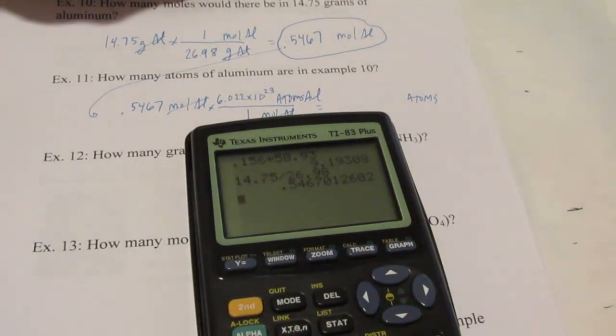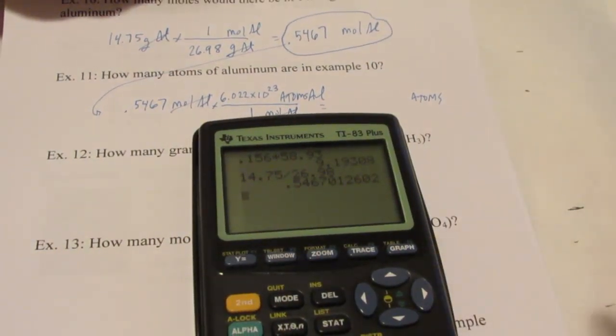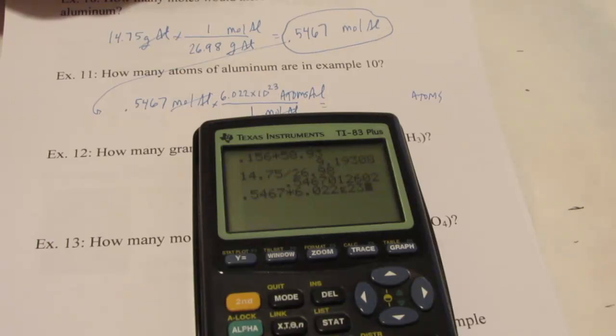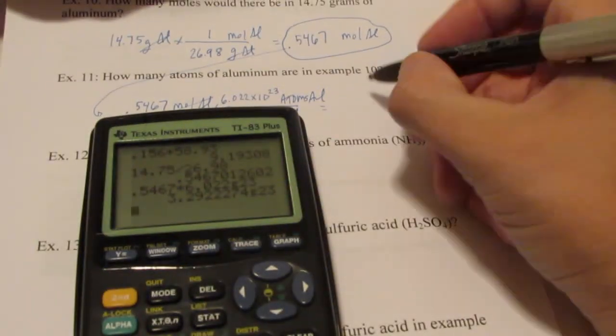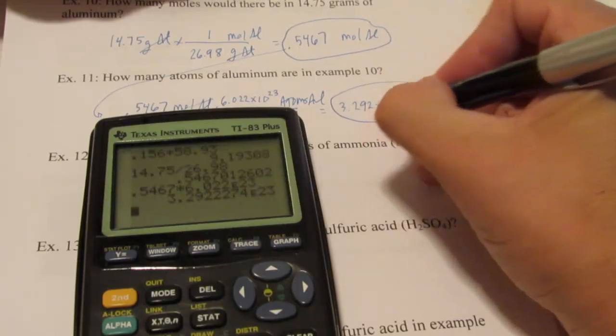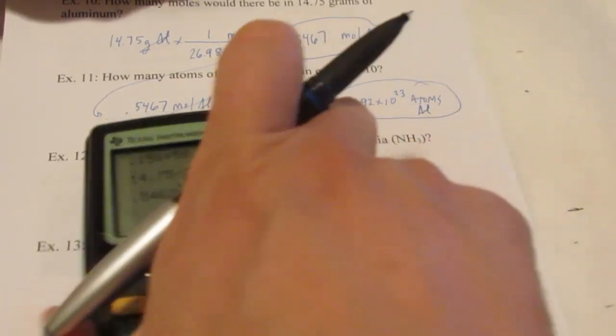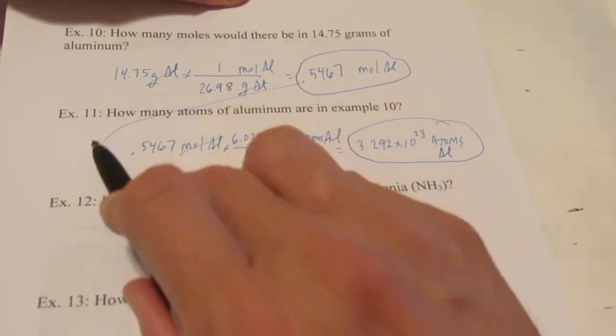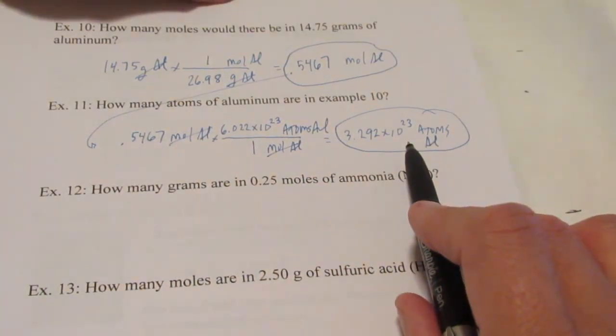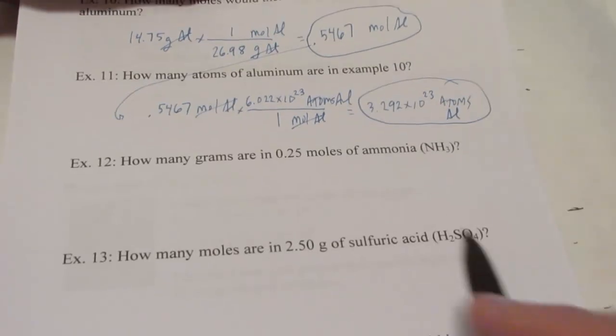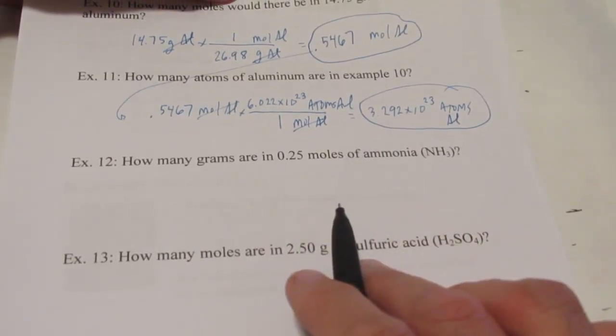So let's plug this in my calculator and see what we get. I'm on my 0.5467. I'll enter it again. I'm going to multiply by 6.022 second EE to the 23rd. Enter. Four sig figs again, I have 3.292 times 10 to the 23rd atoms of aluminum. So I went from grams into moles, and from moles into atoms. You have that on your homework tonight. All of these calculations that we just did. Now, we're going to do the same thing, except we're going to use a compound instead of an element.